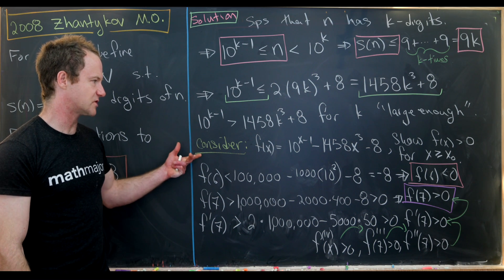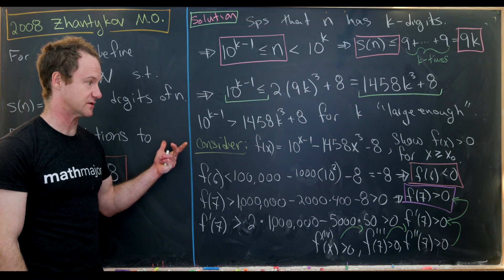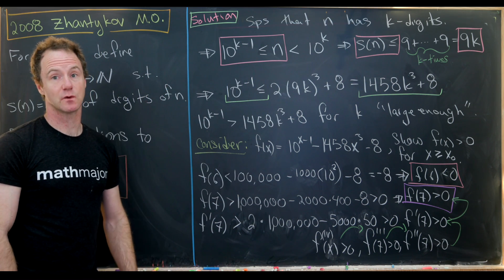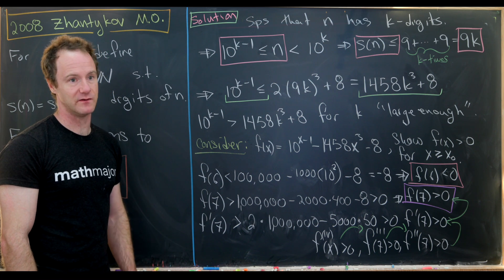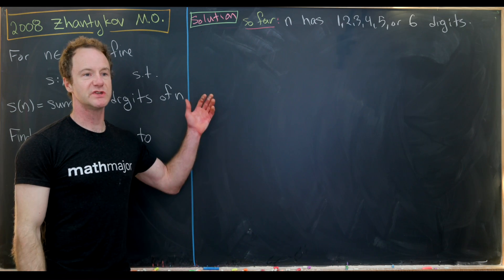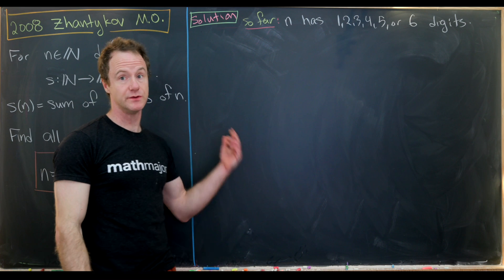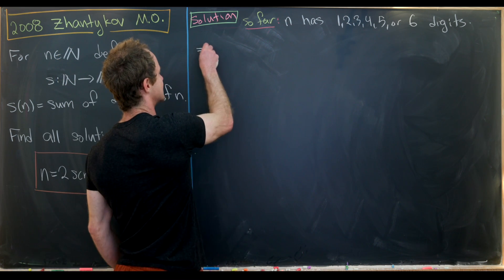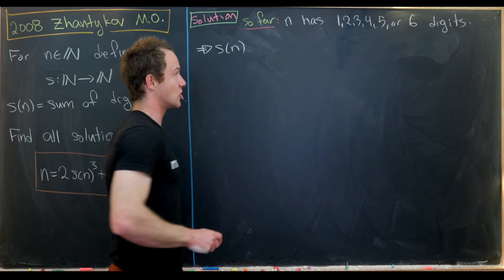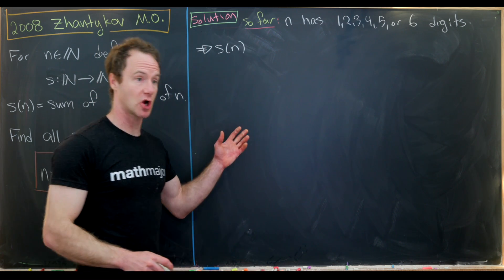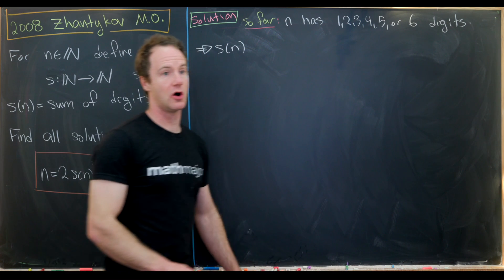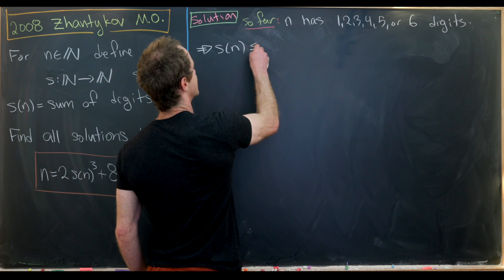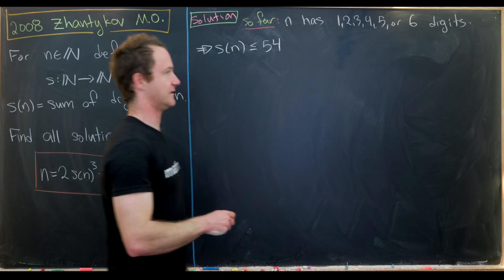Since f > 0 for x ≥ 7, our only possible solutions occur when n has 6 or fewer digits. What does that tell us about s(n)? The largest value of s(n) occurs when n is a 6-digit number with all nines, giving s(n) = 54. So we have s(n) ≤ 54.